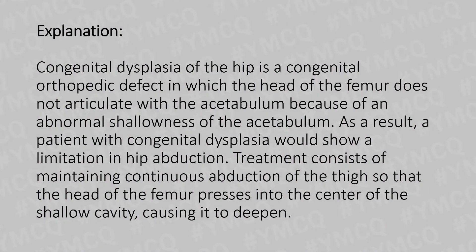Congenital dysplasia of the hip is a congenital orthopedic defect in which the head of the femur does not articulate with the acetabulum because of the abnormal shallowness of the acetabulum. As a result, a patient with congenital dysplasia would show a limitation in hip abduction. Treatment consists of maintaining continuous abduction of the thigh so that the head of the femur passes into the center of the shallow cavity, causing it to deepen.